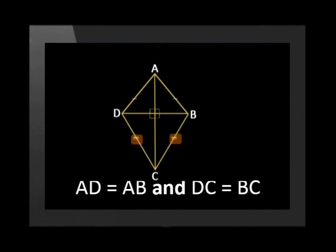The last quadrilateral we're going to look at is the kite. Adjacent sides of a kite are equal. One set of opposite angles is equal. For this kite, angle D equals angle B. The diagonals bisect each other at 90 degrees. The diagonals bisect the corner angles.